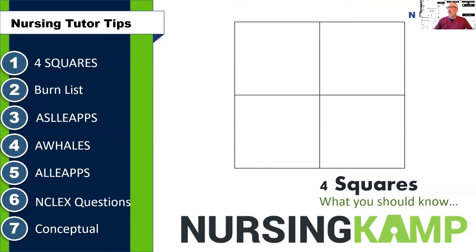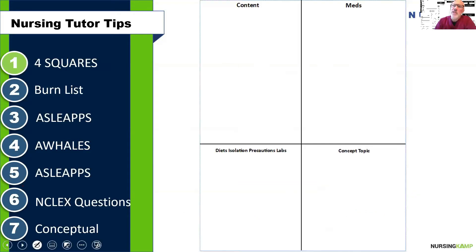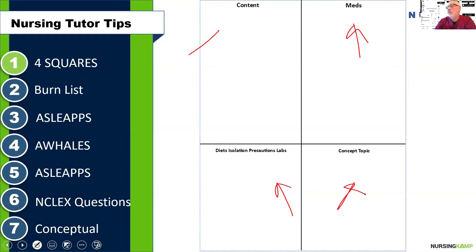This is video number three of seven where I covered previously about four squares. We said that we always record lectures because our mind is going to go in and out. And what we want to do is separate this paper into four different parts and basically isolate that.